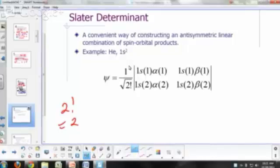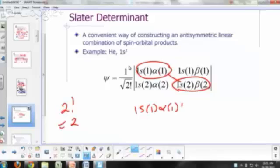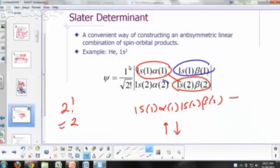How do you evaluate a two by two determinant? This times that, right? So 1s1 alpha1, 1s2 beta2. When you write that one, that's 1s1 alpha1, 1s2 beta2. So that's electron one spin up, electron two spin down.